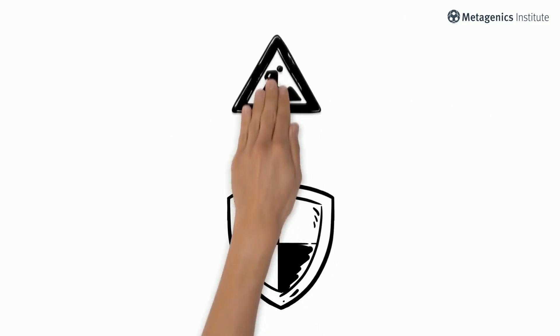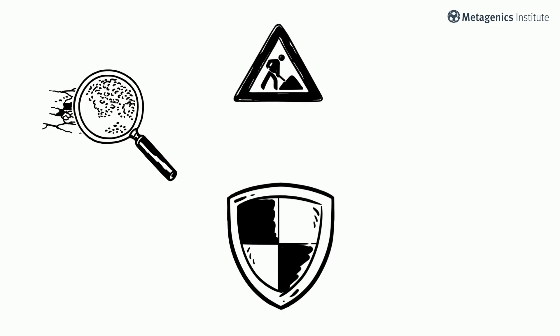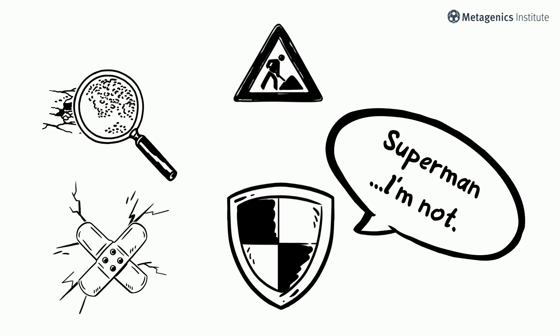Besides fighting germs, the immune system is vital for maintenance work such as locating and removing abnormal cells and promoting wound repair and healing. It is essential for our survival, but our immune system is not invincible. For